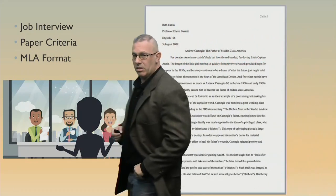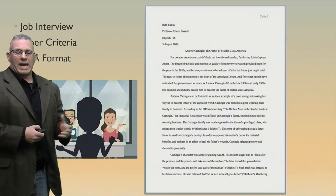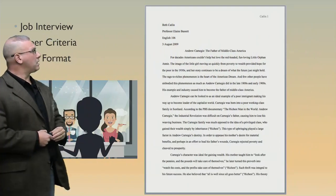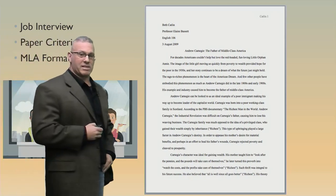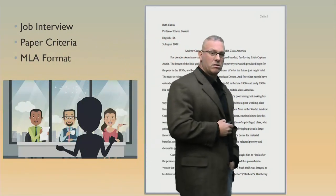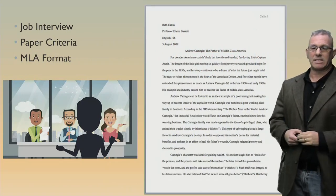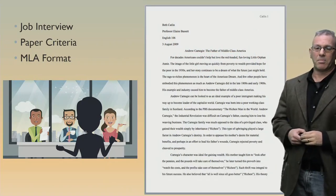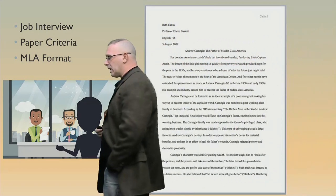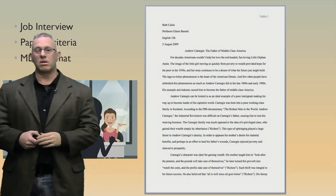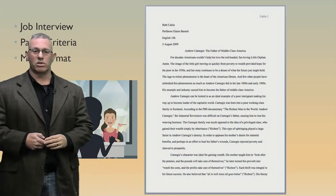I have an example here of a random paper. This is the first thing I see. The paper has paragraphs, a title, it's clean, it's printed in black ink. It has the necessary information at the top of the page. It has last name and page number in the right-hand corner. This is all part of MLA format, and these are some of the first things I would see when you turn in your paper.